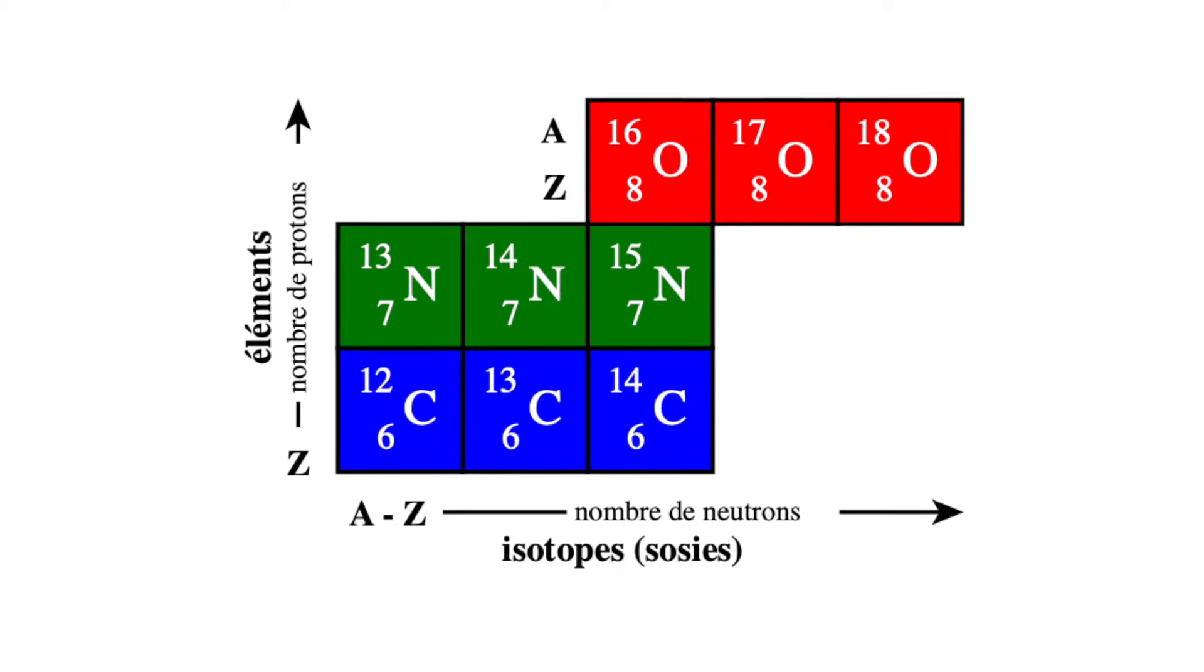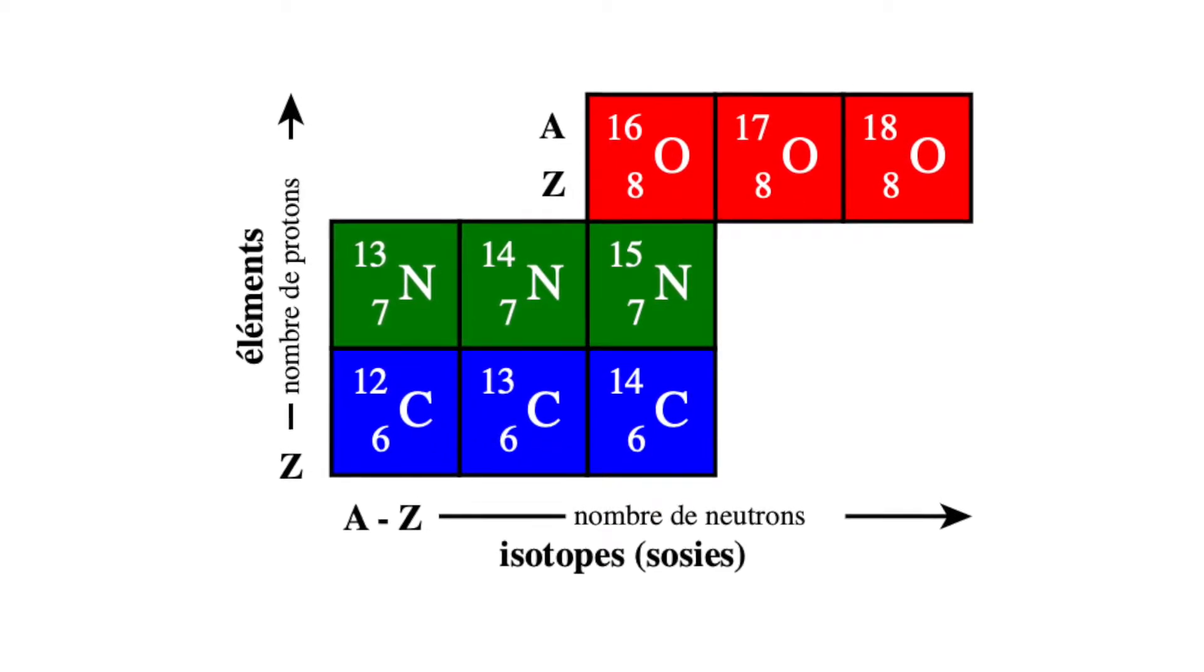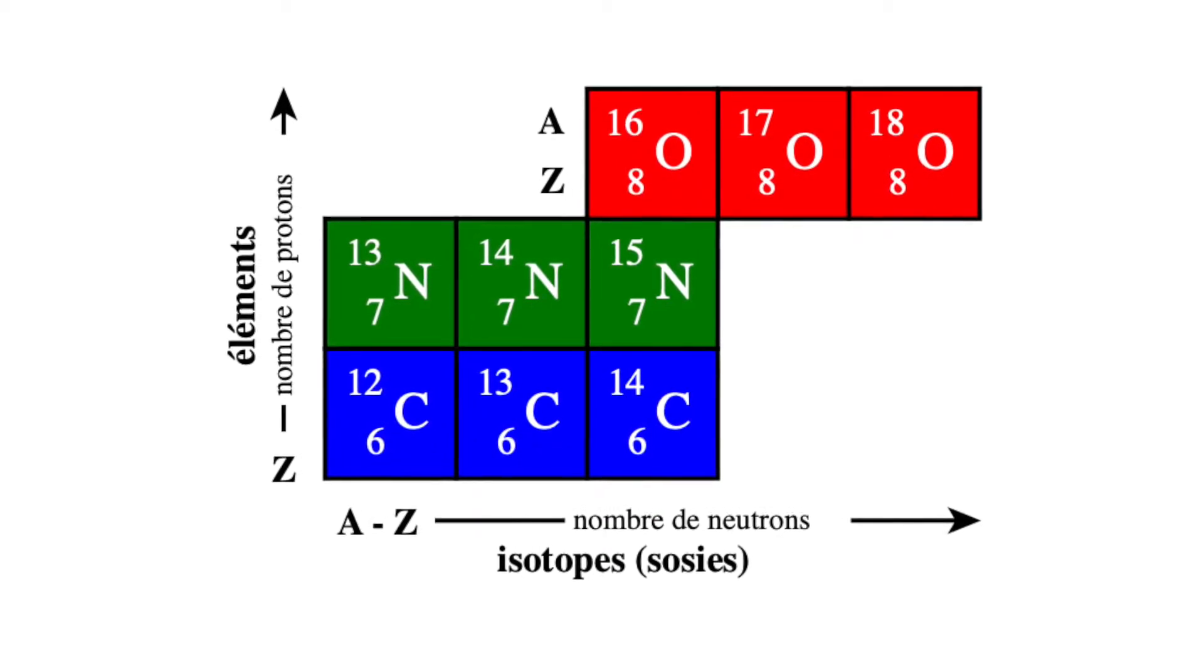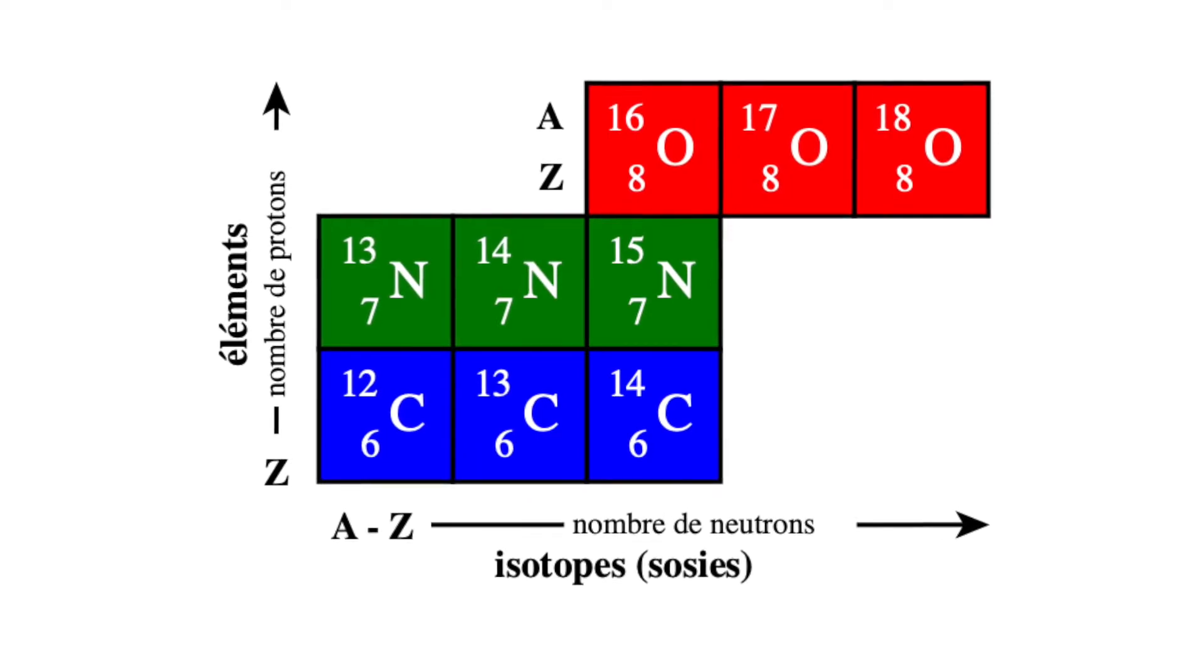Therefore their electric charge and the occupation of the orbitals is the same. Only their nuclear mass and thus the total mass is different. This ensures an almost identical chemical behavior of the isotopes.